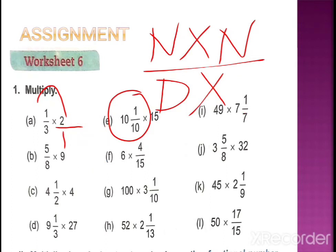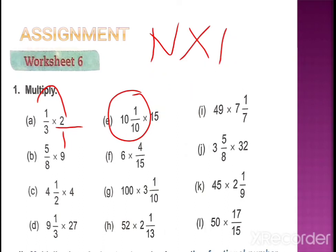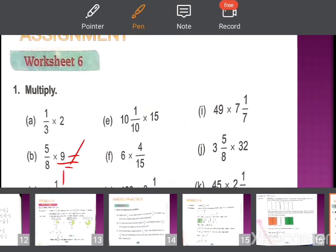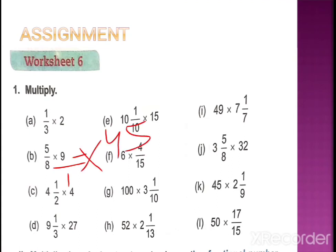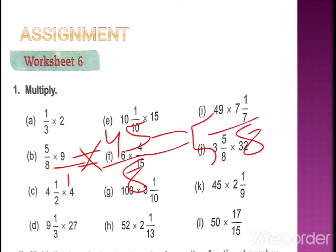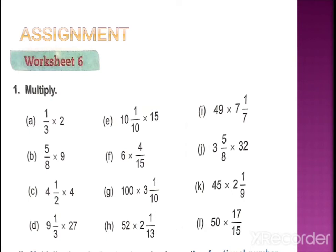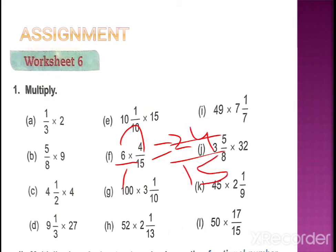One more example: here the denominator of 9 is not given, so we understand it as 1. Now multiply: 9 × 5 = 45 for the numerator, and 8 × 1 = 8 for the denominator, giving 45/8. Convert to mixed form: 8 × 5 = 40, with 5 left, giving 5 and 5/8. Another example: denominator not given so 1 is understood. Multiply 6 × 4 = 24 and 15 × 1 = 15. Convert to lowest terms — divisible by 3: 24 ÷ 3 = 8, 15 ÷ 3 = 5 — giving 8/5. Convert to mixed: 5 × 1 = 5, 3 left, so 1 and 3/5.